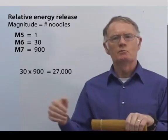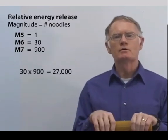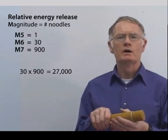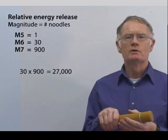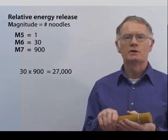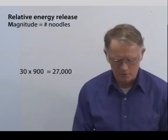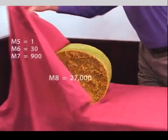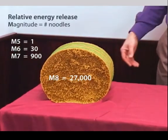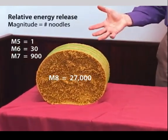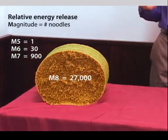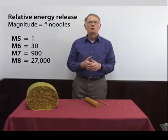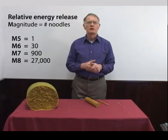If I want to go the next step to a magnitude 8 earthquake, I'll have to take this bundle of 900 multiplied by another 30 to get a bundle of 27,000 strands of spaghetti to represent a magnitude 8 earthquake. A bundle of 27,000 strands of spaghetti — I can barely lift it, let alone imagining maneuvering it in my hands and trying to bend it to break through that bundle of 27,000 strands of spaghetti.